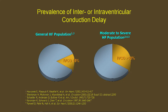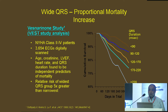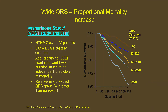Interventricular conduction delay: the general prevalence is 15%. If the patient has a wide QRS complex, the interventricular conduction delay is 30%. Wide QRS is associated with increased mortality — the more the QRS duration widens, the more mortality increases.